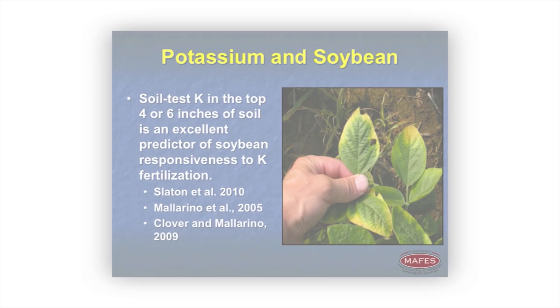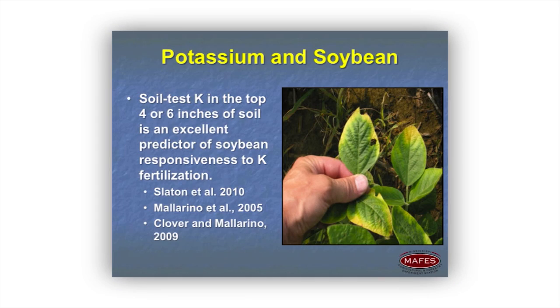You have routine soil testing — three years is the cycle most people recommend. However, in highly productive situations we may need to soil test sooner than three years. We do know that soil test potash in the top four to six inches of soil is an excellent predictor of soybean yield.